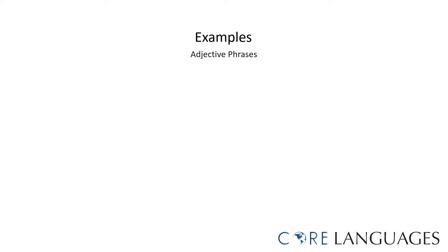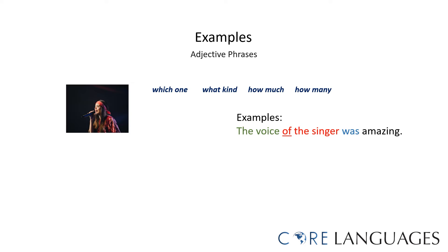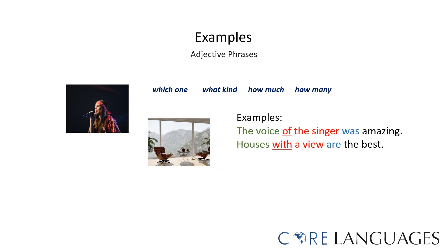When prepositional phrases serve as adjectives, they become adjectival phrases, and we can usually ask for them by using: which one, what kind, how much, or how many. For example, the voice of the singer was amazing. 'Of' is the preposition, and 'of the singer' is the adjectival phrase that serves as an adjective to the noun 'the voice.' Houses with a view are the best. 'With' is the preposition, and 'with a view' is the adjectival phrase that describes the noun 'houses.'